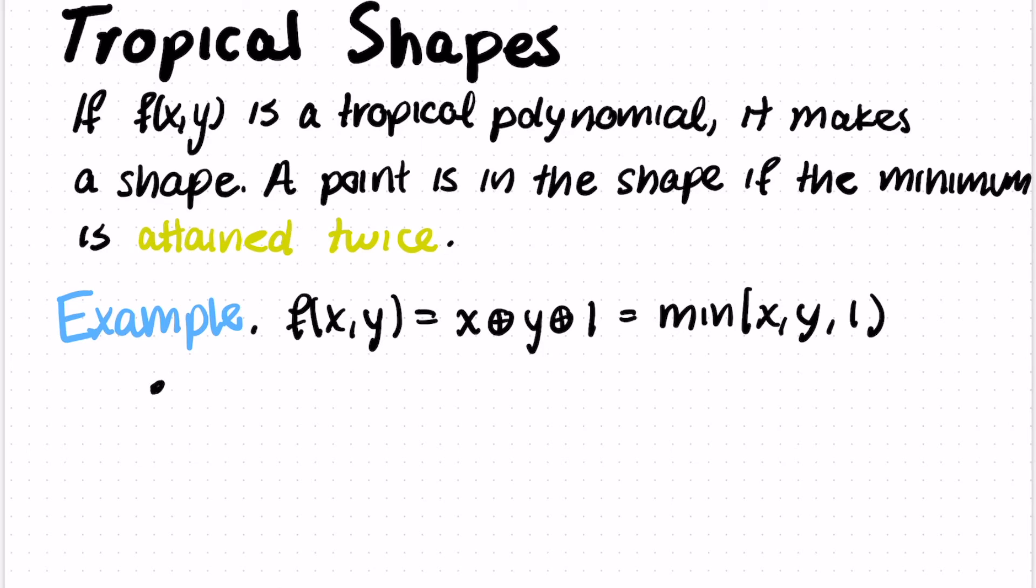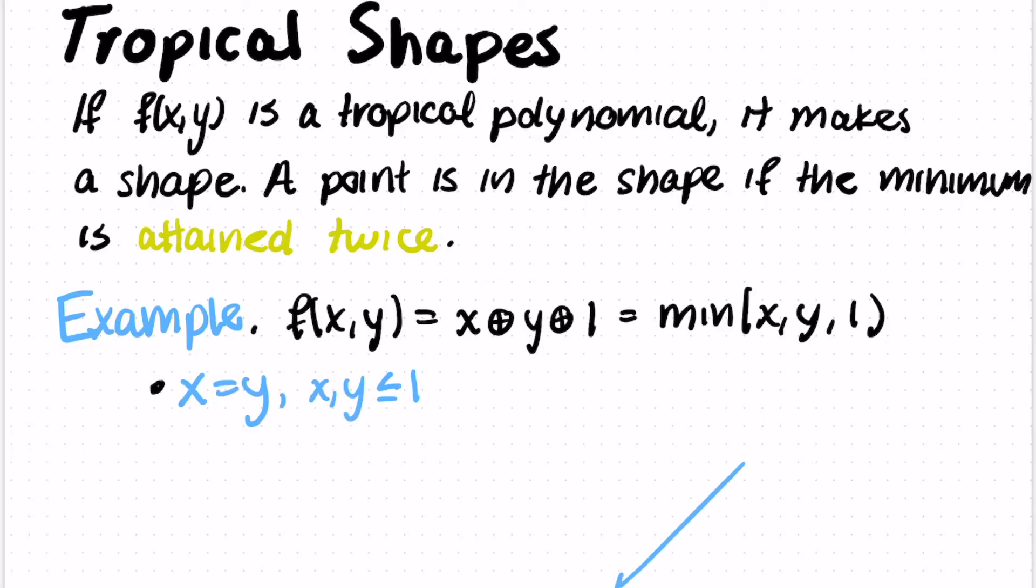So for example, if x is equal to y and both are less than or equal to 1. So if we put in, for example, 0, 0, the minimum would be between 0, 0, and 1. So 0 is attained twice. That's going to be a point in our tropical shape. Those collection of points, x equals y and x and y are both less than or equal to 1, gives us a ray in the minus 1 minus 1 direction. And that ray starts from the point 1 comma 1.